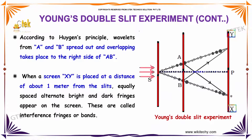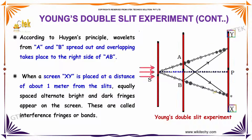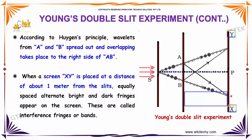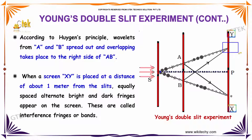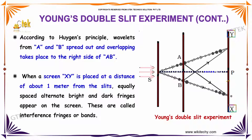According to Huygens' principle, the wavelets from A and B spread out and overlapping takes place to the right side of AB. When a screen XY is placed at a distance of about 1 meter from the slits, equally spaced alternating bright and dark fringes appear on the screen. These are called interference fringes or bands.